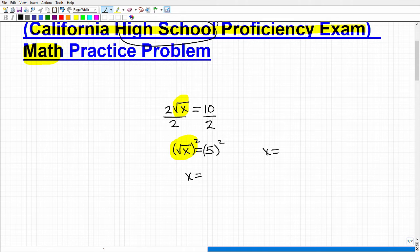So x is going to be equal to five squared, which, of course, is 25. And this would be the solution to our original equation, which was two times the square root of x is equal to 10.